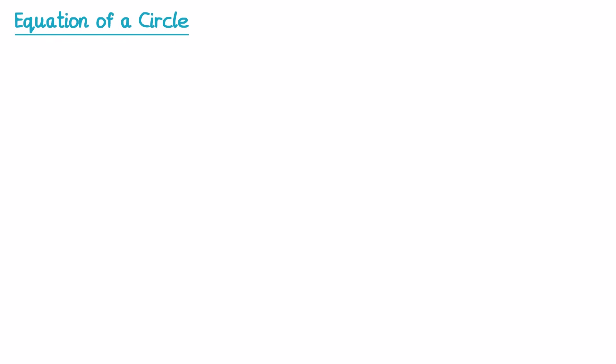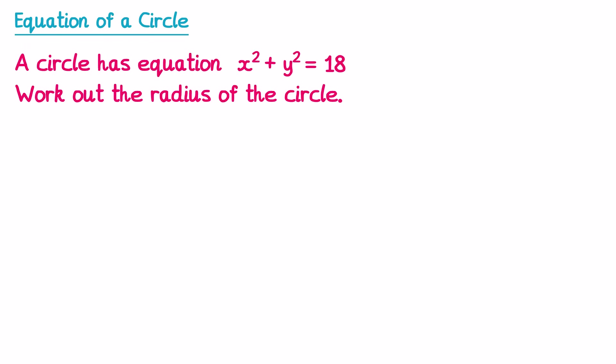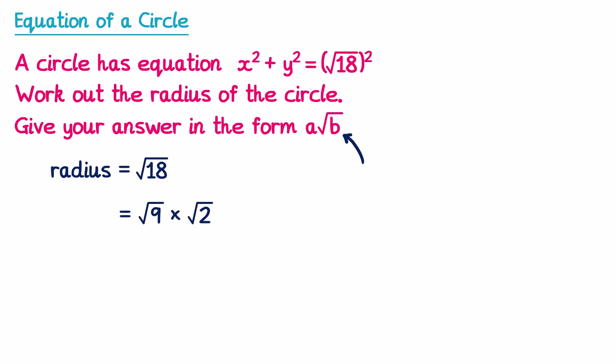Now let's look at a slightly more difficult question. We have a circle with equation x² + y² = 18, and we need to find the radius in the form a√b where a and b are integers. We rewrite 18 as (√18)², so the radius is √18. To simplify, we write √18 = √9 × √2 = 3√2. This is now in the form a√b where a = 3 and b = 2.